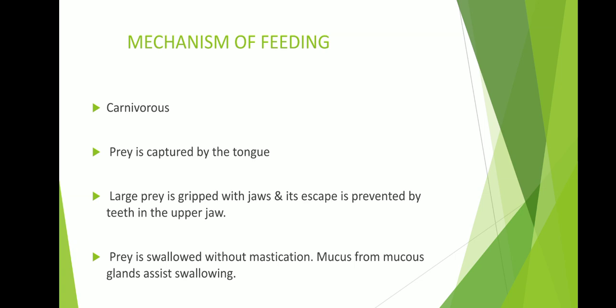Its attachment at the anterior end of the buccal cavity enables it to be projected some distance from the mouth — this happens in the case of small prey. A large prey is gripped with the jaws, and its escape is prevented by backwardly directed teeth present along the margin of the upper jaw.